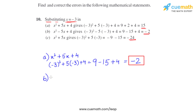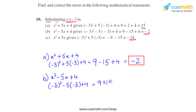For part b, x squared minus 5x plus 4, substituting x as minus 3: it becomes minus 3 whole square minus 5 into minus 3 plus 4. Minus 3 whole square is 9. Minus 5 into minus 3 gives plus 15, plus 4. So 9 plus 15 is 24, plus 4 is 28. The correct answer is 28, not minus 2.